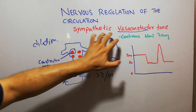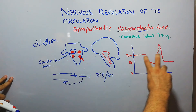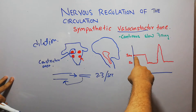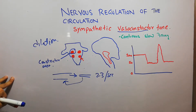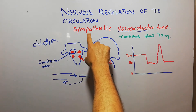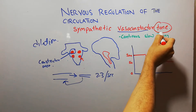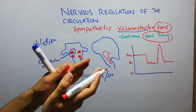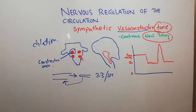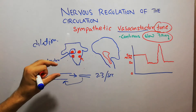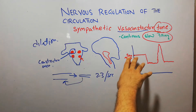The importance of this sympathetic vasoconstrictor tone can be explained with an example. This diagram shows the pressure in the blood vessel. Under normal circumstances, when the sympathetic vasoconstrictor tone is present, this continuous slow firing maintains tone or pressure in the blood vessel at the level of 100 mmHg, helping to maintain a mean arterial pressure of around 100 mmHg.